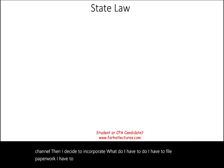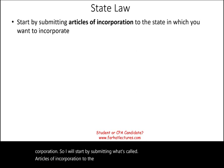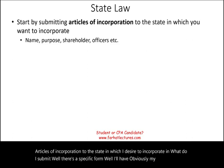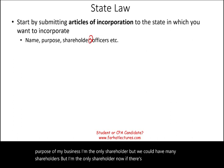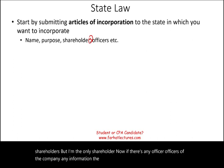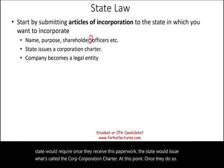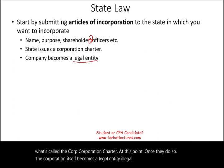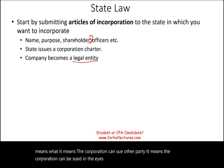You have to tell a certain state — for example, the state of Delaware — that you would like to become a corporation. You submit what's called articles of incorporation to the state in which you desire to incorporate. That submission includes your name, the purpose of your business, any shareholders, officers, the address, and any additional information the state requires. Once they receive this paperwork, the state issues what's called the corporation charter. At that point, the corporation itself becomes a legal entity — a legal person — meaning the corporation can sue other parties and can be sued. In the eyes of the law, the corporation becomes an individual.